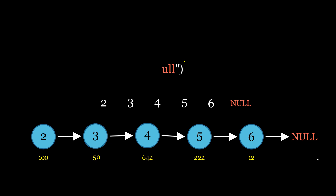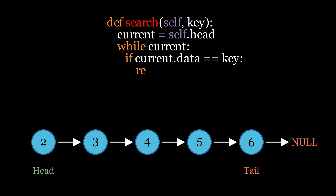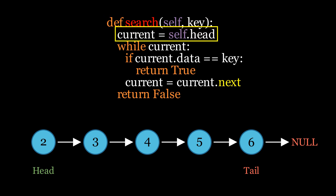Now let's remove these address labels to make more room on the screen. The next operation is searching for an element, which is quite similar to traversal.